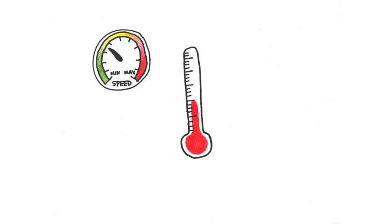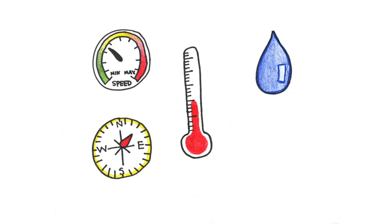The snowflake formation is affected by a couple of different parameters that include temperature, air current speed, air current direction, humidity, and the seed particle the snowflake forms on.